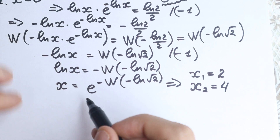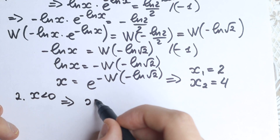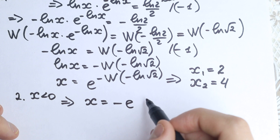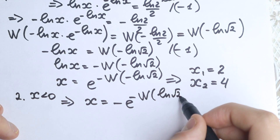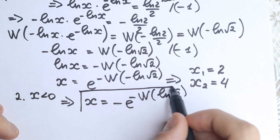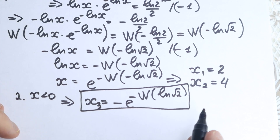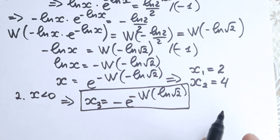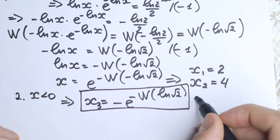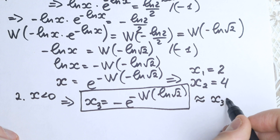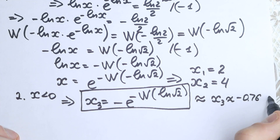For Case 2, where x is negative, we get x equals minus e to the power of minus W of natural log square root of 2. This is our x₃, and its approximate value is x₃ approximately equals minus 0.766.